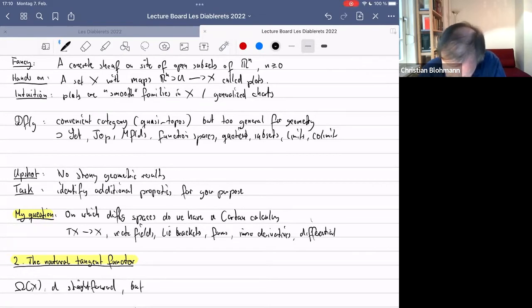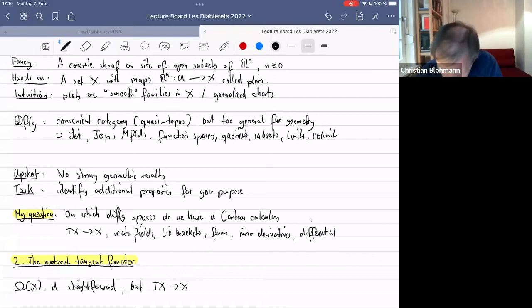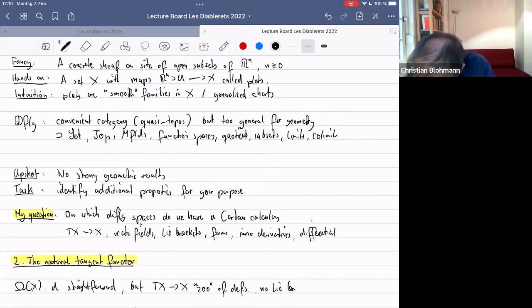So the bad news is this thing, TX, the tangent thing, the tangent object, tangent diffeological space, tangent bundle. There's a whole zoo of inequivalent definitions. And moreover, whatever people do, they don't do what we want them to do. They don't give you Lie brackets, for example, or an inner derivative. I mean, we do have a de Rham complex, it's canonical, so we'd like to be able to insert vector fields into the forms. But this generally does not exist. And the situation is just really messy, very complicated anyway.